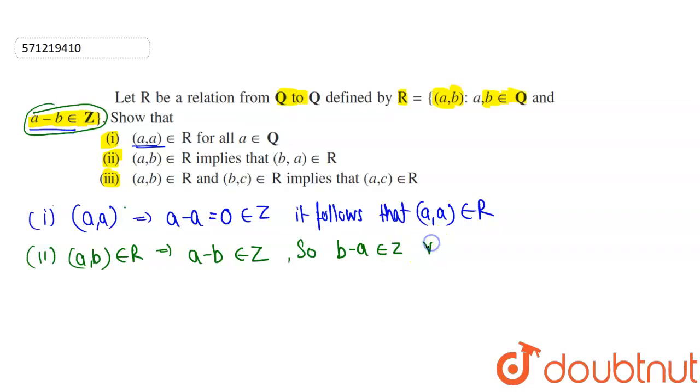If I take (b,a) ∈ R, this means that b-a belongs to the set of integers. So this is also true, which holds for all a,b ∈ Q. So this statement is verified.